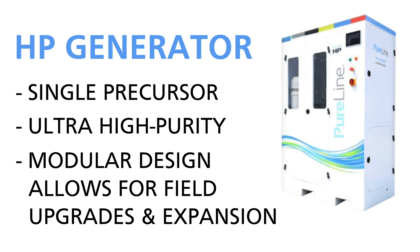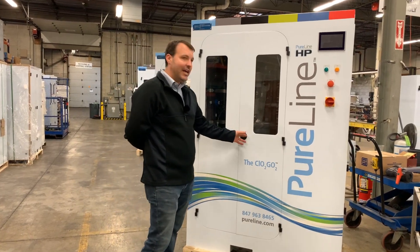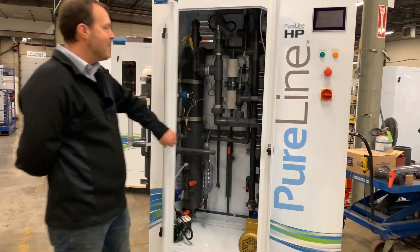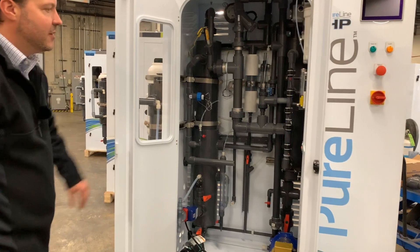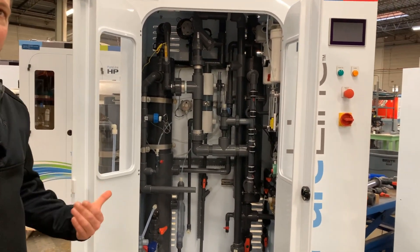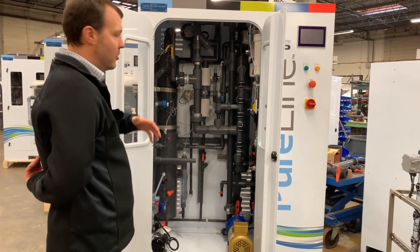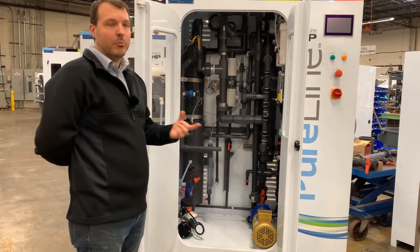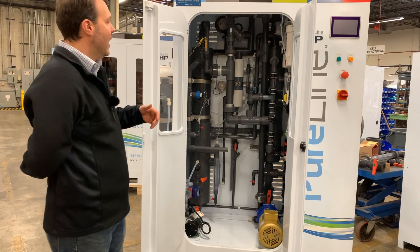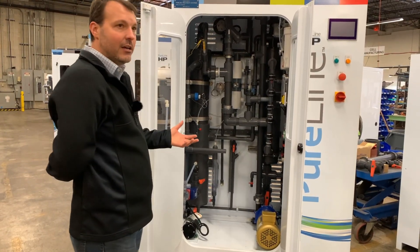Standard is three injection points, but can be expanded to literally almost as many as you'd want. This is a base unit, not fully built out yet, but has all the primary components. It's modularly designed to be able to upgrade in the field with the number of electrolytic cells, so chlorine dioxide is produced from a single precursor — sodium chloride — electrochemically through the cells to produce chlorine dioxide.